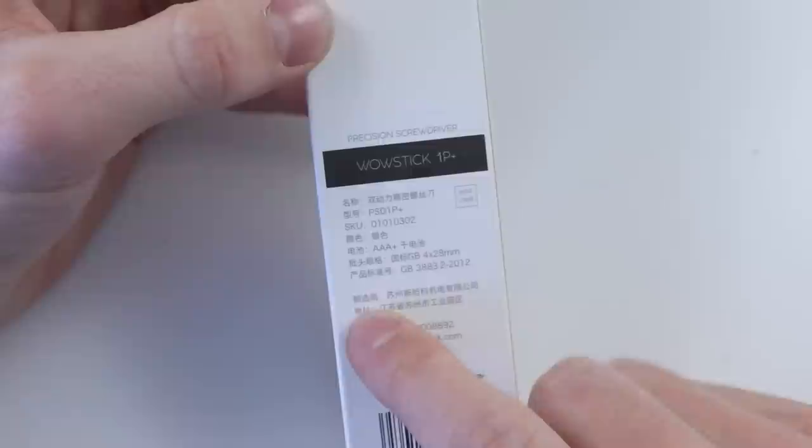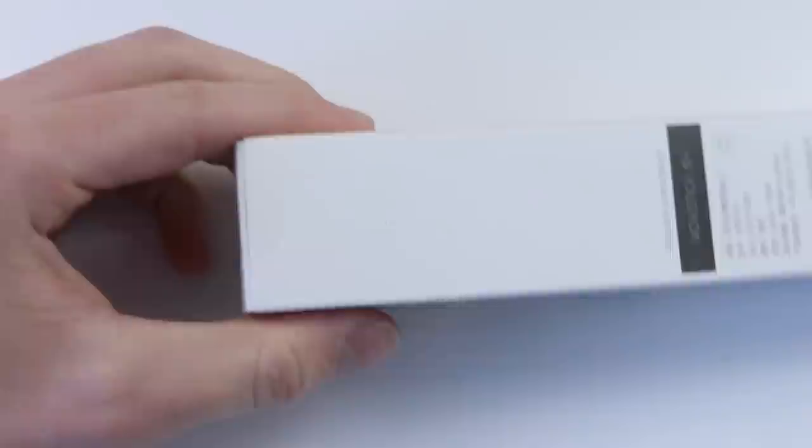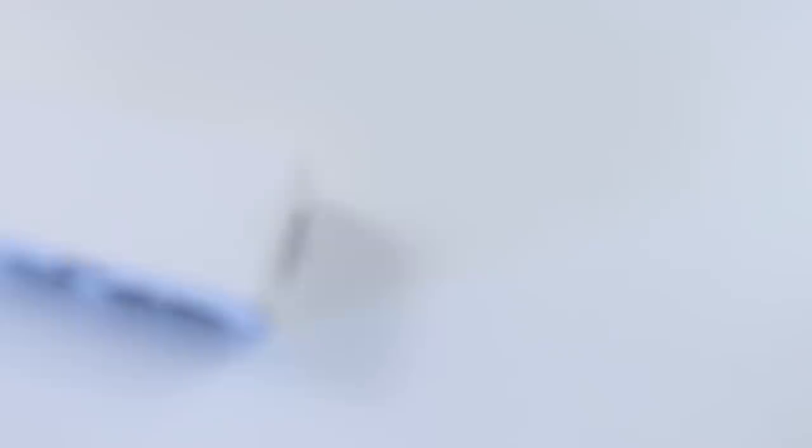It's called the Wow Stick 1P Plus. There's a lot of Chinese writing and all that good stuff. So let's have a look. I assume it opens from the top. Let's take out this fancy knife and do an unnecessarily cool flick and cut it open. This totally feels like something which Big Clive would review on his channel.